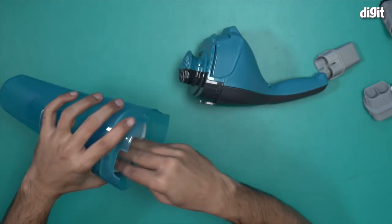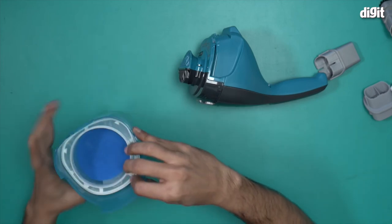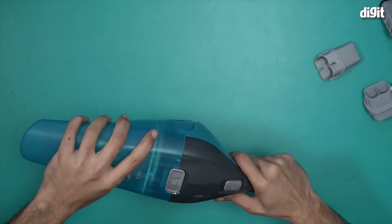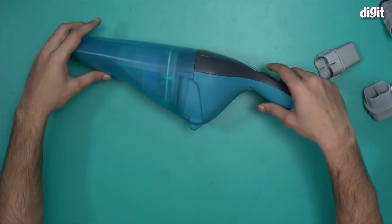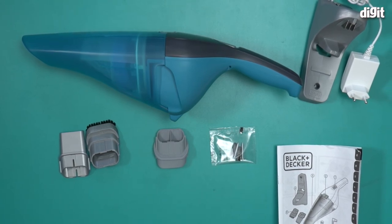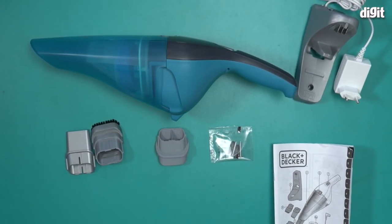There you go. And once again, this is what you'll find inside the box containing the Black+Decker Dust Buster 7.2-volt vacuum cleaner. Thank you for watching.